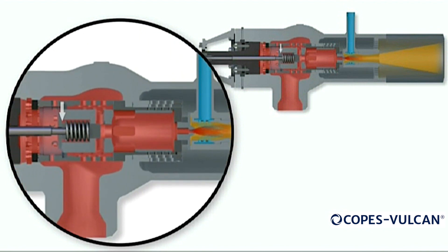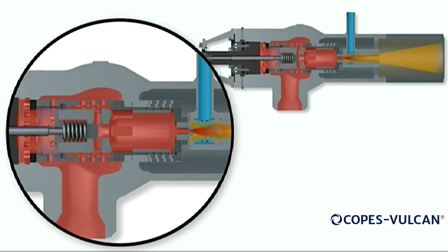The pilot plug shoulder has now engaged with the underside of the tandem cap of the main plug. The main plug now starts to lift, and the main seat opens.